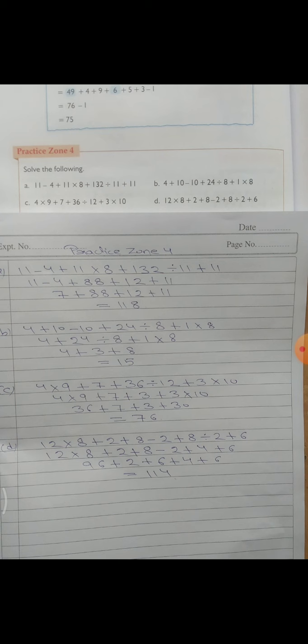Solve the following. अब यह equation है, इसके अंदर divide वाली term है, multiplication, addition and subtraction. तो सबसे पहले divide वाली term को solve करेंगे, फिर multiplication, then addition, then subtraction. यह part के अंदर देखिए: 11 minus 4 plus 11 multiply 8 plus 132 divided by 11 plus 11. तो सबसे पहले 132 को 11 से divide करेंगे, तो 12. फिर 11 multiply 8 = 88. तो 11 minus 4 plus 88 plus 12 plus 11. Solve करेंगे: 7 plus 88 plus 12 plus 11.